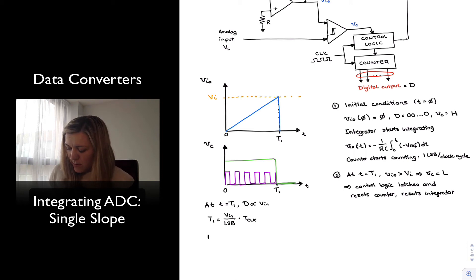Now my LSB, I can calculate as always, is going to be equal to Vref, the reference voltage, which is the full-scale voltage, divided by 2 to the N, which is the number of possible digital states, N being the number of bits in the digital word. So I can substitute this into the expression above, and therefore I know that my T1 is equal to V in divided by Vref times 2 to the N times T clock. So in essence, by measuring the value of T1, I can figure out what is the value of V in.